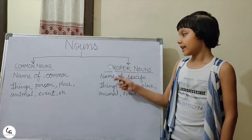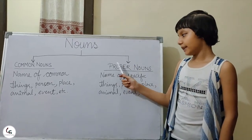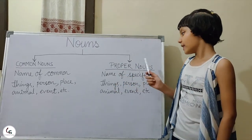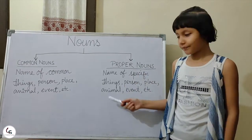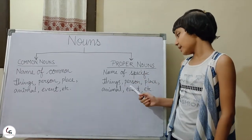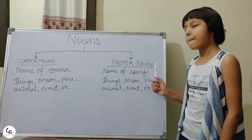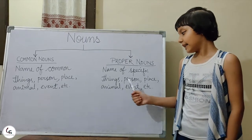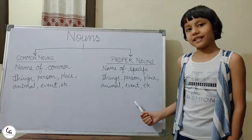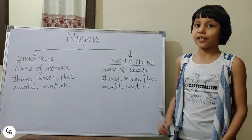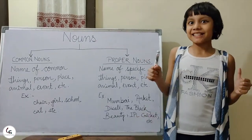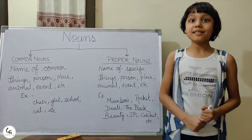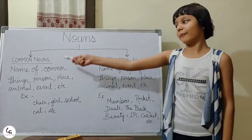Now what are Proper Nouns? Let's see. Proper Nouns are the names of specific things, person, place, animal, event etc. Now let's see some examples of Common Nouns.